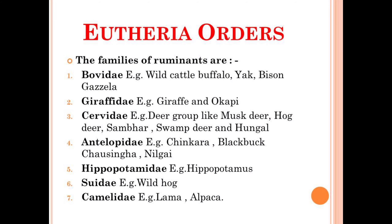As stated earlier, the sub-order Artiodactyla includes animals which are ruminants, and the ruminants have different families. The first family under the ruminants is Bovidae, Giraffidae, Cervidae, Antilopidae, Hippopotamidae, Suidae, and Camelidae. You can note down the different examples of animals belonging to each of these families.